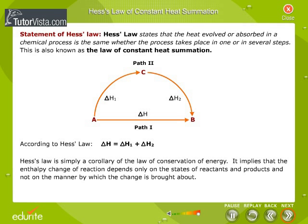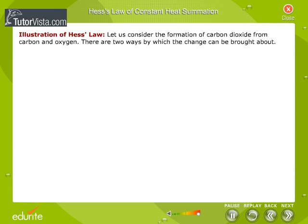As an illustration of Hess's Law, let us consider the formation of carbon dioxide from carbon and oxygen. There are two ways by which the change can be brought about: number one, conversion of carbon to carbon dioxide.